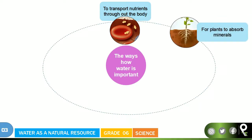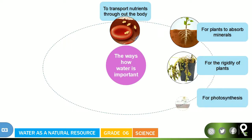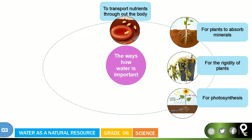For plants to absorb minerals — when the minerals are in the soil, water helps the minerals to be absorbed and move towards the plants, supporting the rigidity of the plants. When water is not received by the stems, the rigidity is lost and the plants become softer and fall down. So water is very important for plants. Not only that, for photosynthesis also, water is a raw material — it is very, very important for plants to make their food.